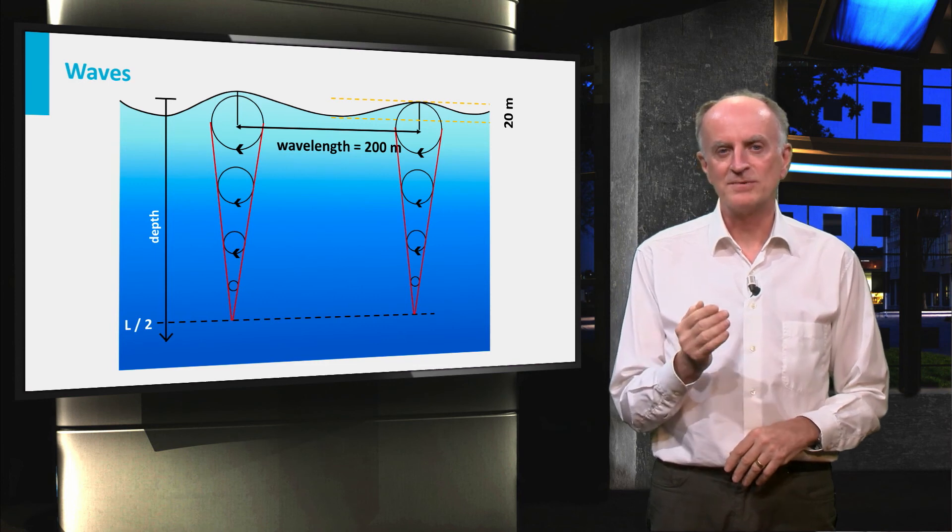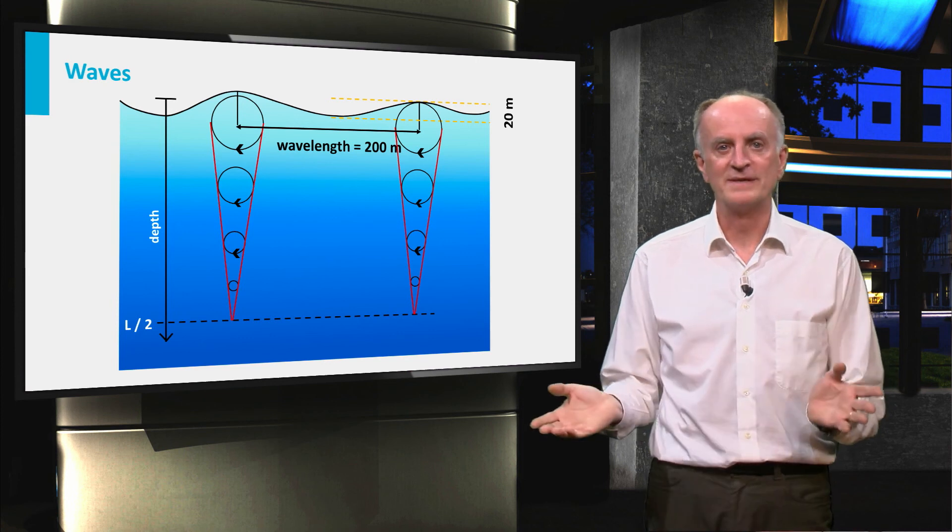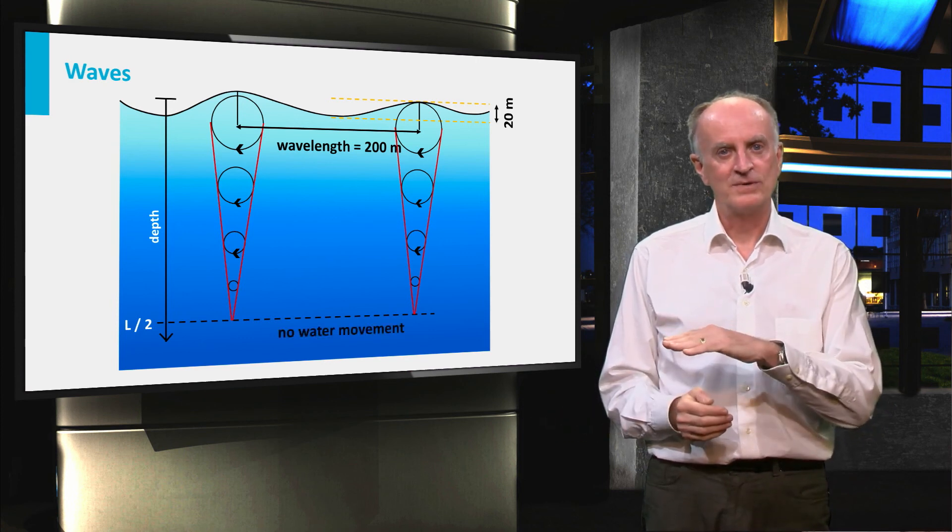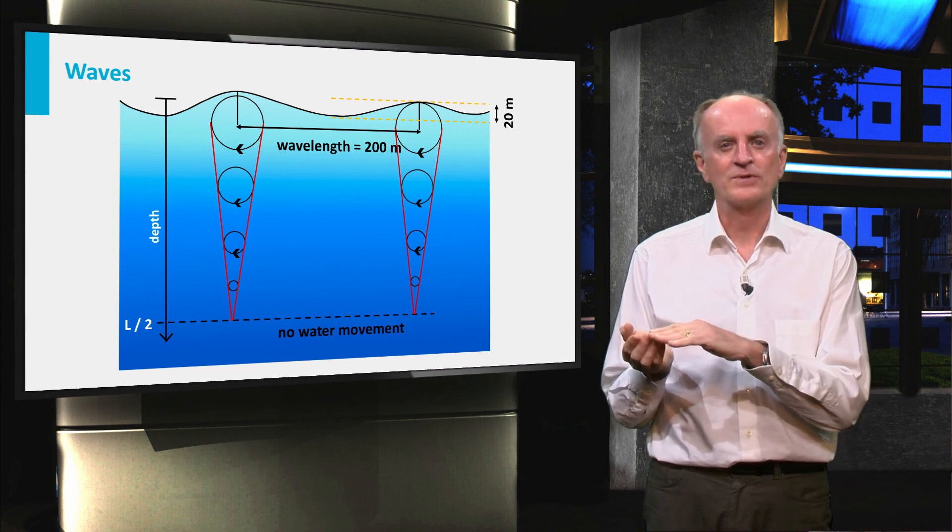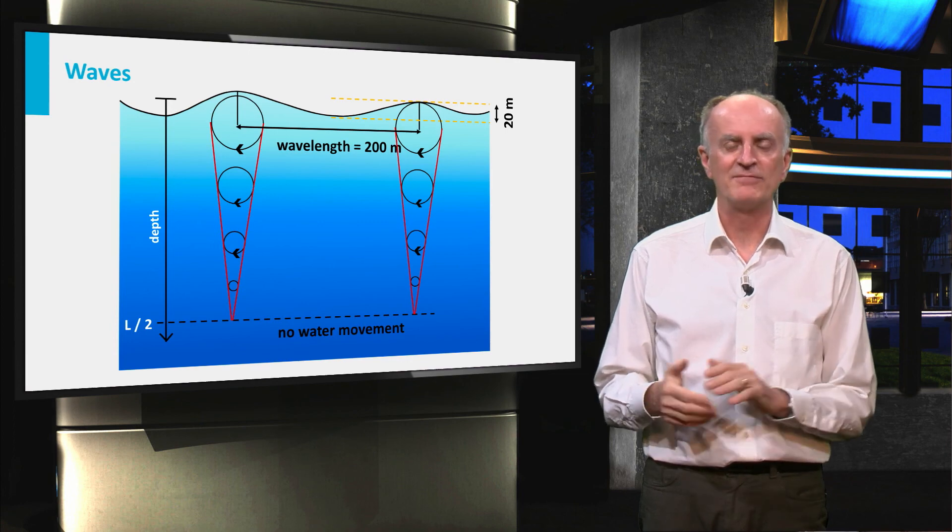Water oscillations decrease with depth, and at a depth roughly corresponding to half of the wavelength, no movement is recorded. We can then define the wave base, which is the depth under which water is not affected by wave movements. The depth of the wave base is roughly half of the wavelength.